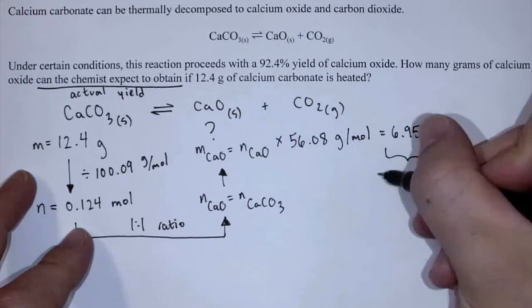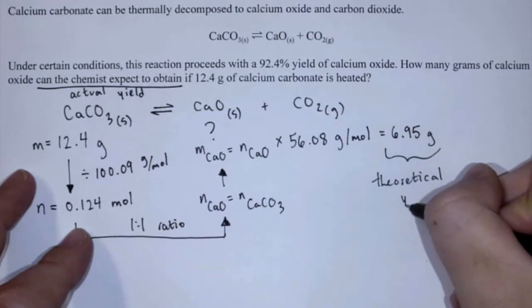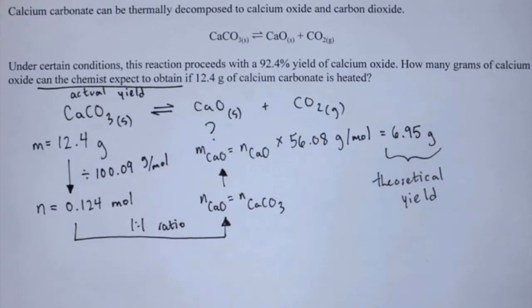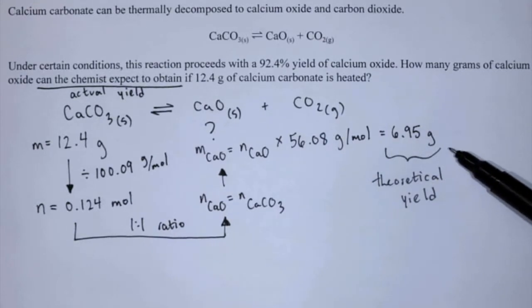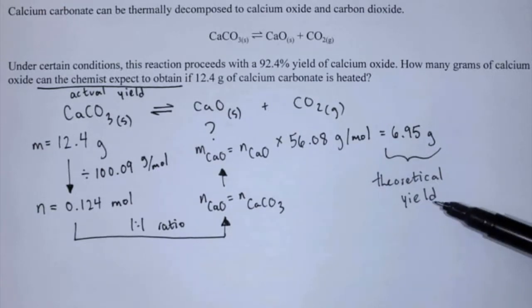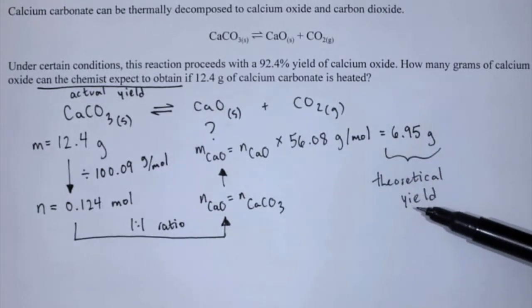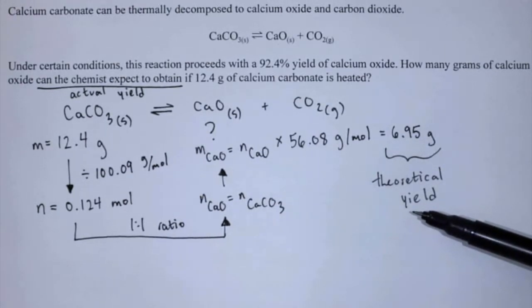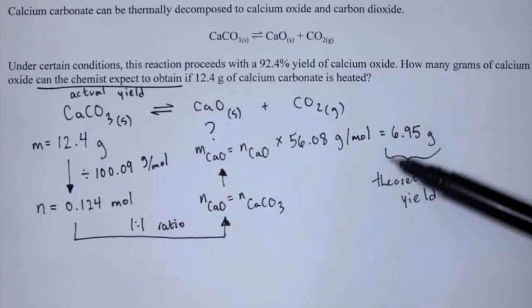This is the theoretical yield — a theoretical yield can be calculated using stoichiometry. Up until now, before you learn about percent yield, you've actually been calculating theoretical yields. Theoretically, assuming no loss of reactants or products as you work up the material, you will get this much out of your reactions.